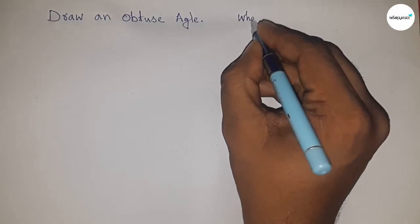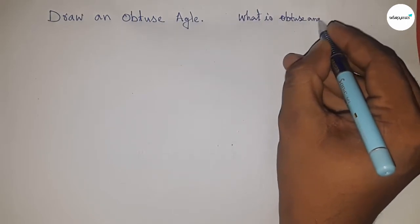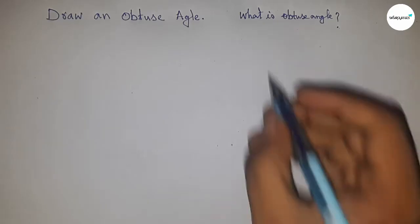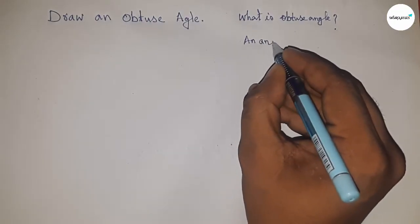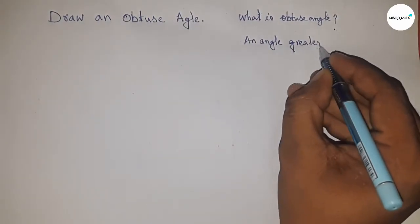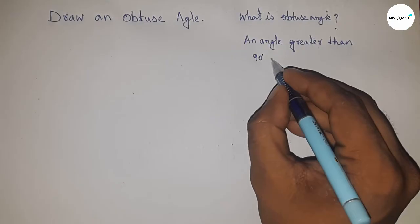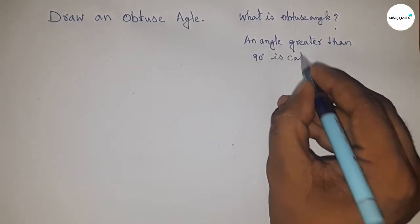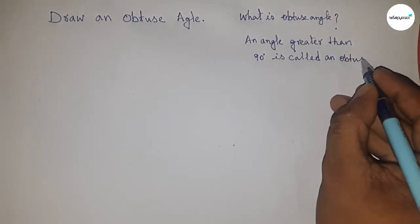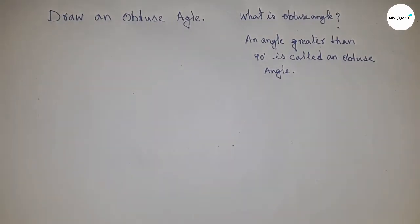First, what is an obtuse angle? An angle greater than 90 degrees and less than 180 degrees is called an obtuse angle. If there are angles like 91 degrees, 95 degrees, 110 degrees, 120 degrees, and 135 degrees, all are greater than 90 and less than 180, so this type of angles are called obtuse angles.